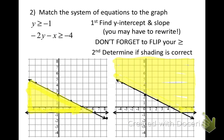Another thing I'm going to ask you to do is match a system of equations with its graph. In this example, y is greater than or equal to -1 is a horizontal line at -1. Looking at both graphs, they both have a horizontal line at -1, it's a solid line, and both are shaded above.